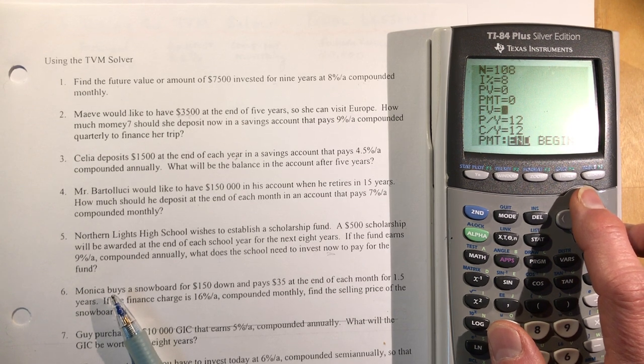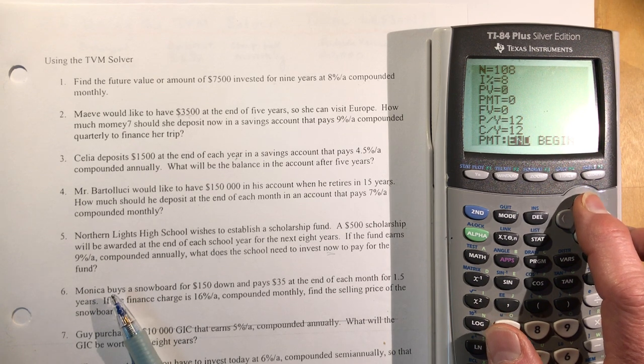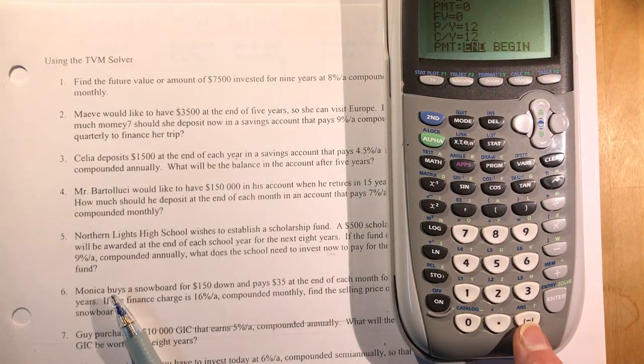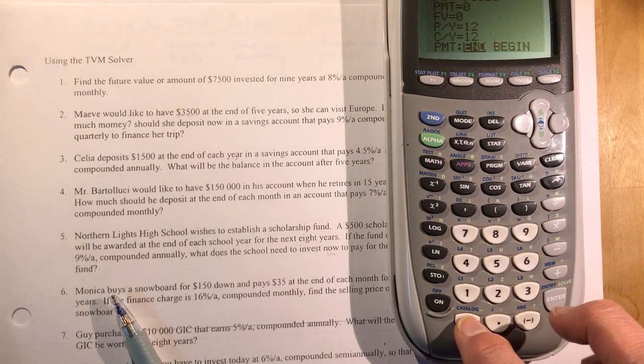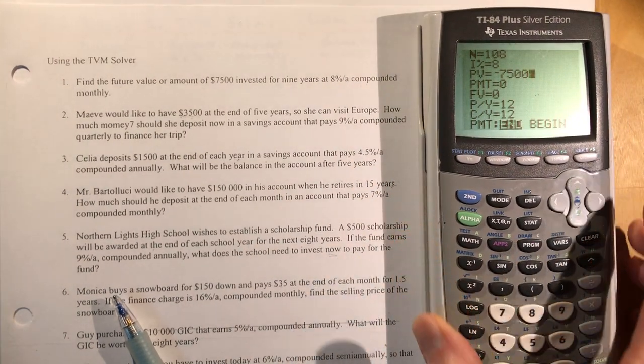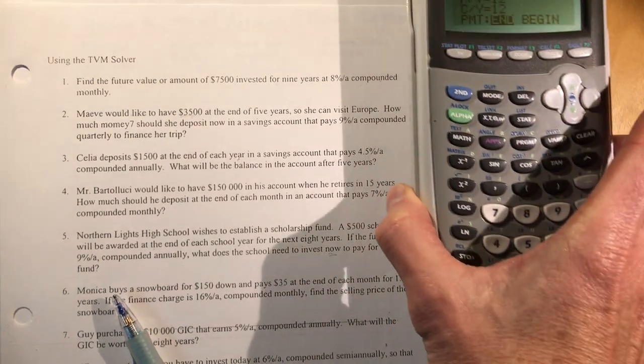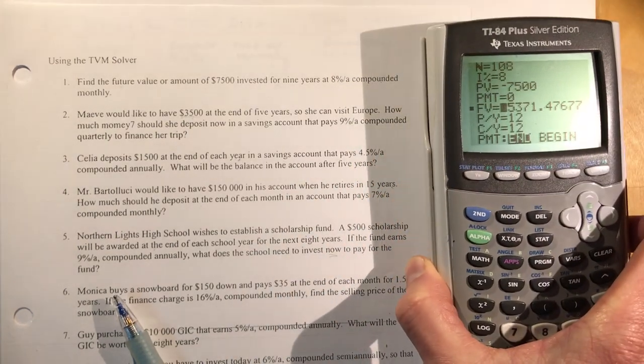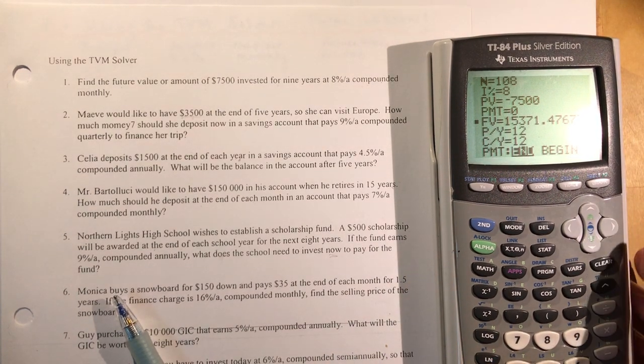I'm trying to find future value. I need to know the present value. If you put money into the bank, it is negative. Use the negative sign here, not the subtracting one. I put in negative 7,500 and scroll down to future value. I do alpha, that's this green button, and down here over the enter it says solve. It will solve your question for you.